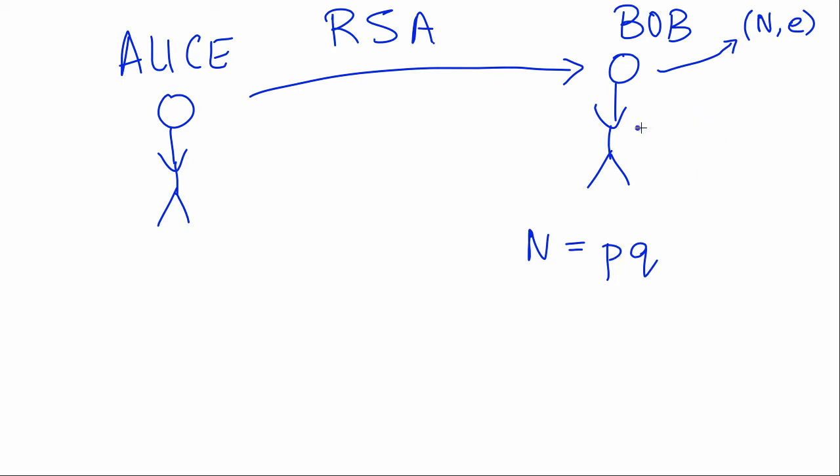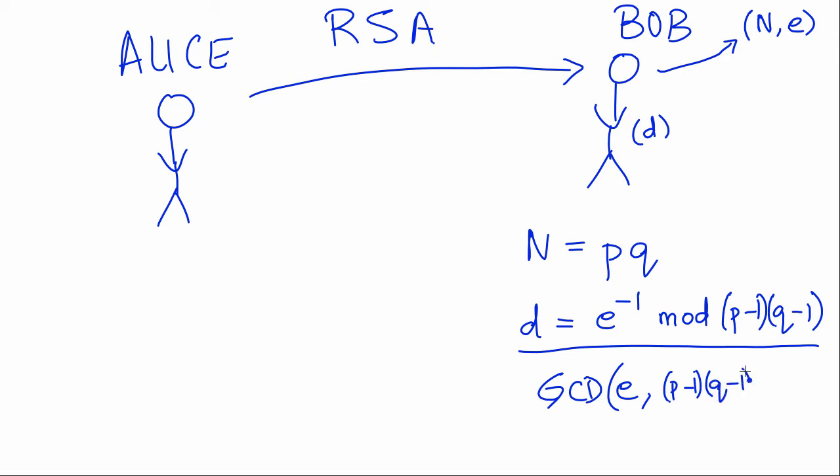Bob also has a private key called D, which he doesn't show anyone. D is basically E inverse mod P minus 1, Q minus 1. From here we see that it's essential that the GCD of E and P minus 1, Q minus 1 has to be 1, because otherwise the inverse of E would not exist.